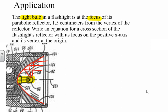In this problem, we know the reflector is 1.5 centimeters from the vertex. This is the vertex of the reflector. Write an equation of a cross-section of the flashlight reflector with its focus on the positive x-axis and its vertex at the origin.